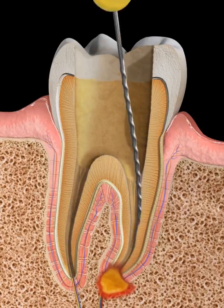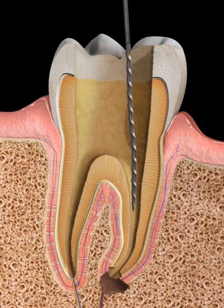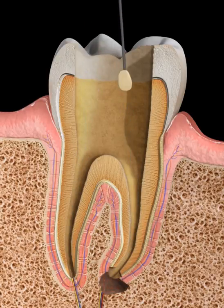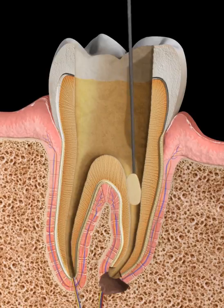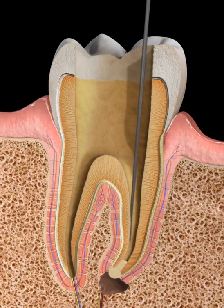the canal apex is plugged using a biocompatible material such as MTA or calcium hydroxide, which helps promote closure of the end of the root.